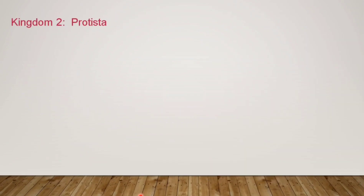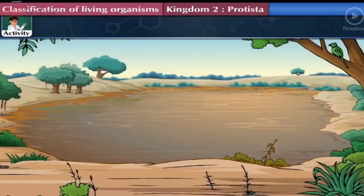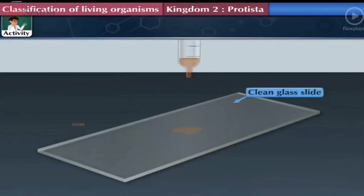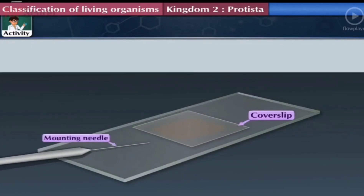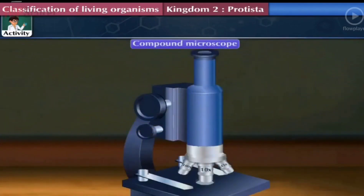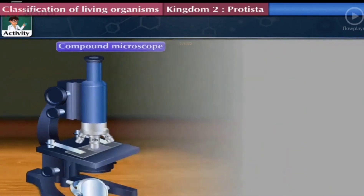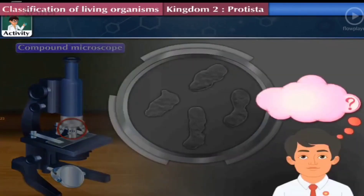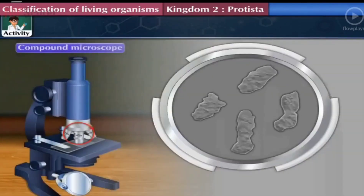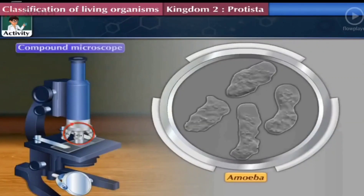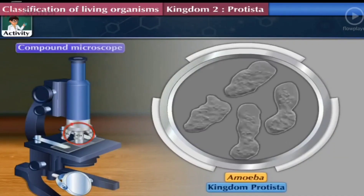Now let us see Kingdom Protista. Activity: Collect water from a pond and take a drop of it on a clean glass slide. Put a clean cover slip on it using a mounting needle — this is a temporary mount of pond water. Observe this mount first under low power and then under high power of a compound microscope. We see irregular-shaped microbes moving under the microscope. These are amoeba, which belong to Kingdom Protista.